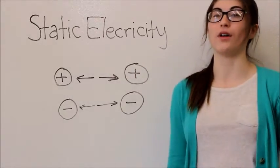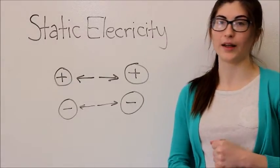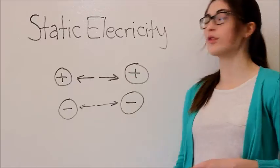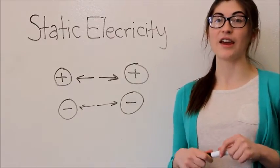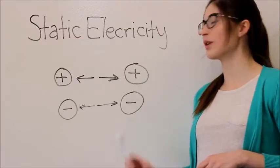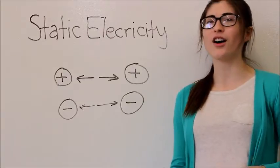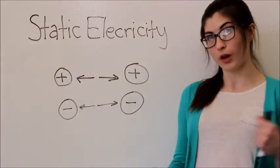Here we have an example of two different charges that are repelling. Here we have two protons and because they are like charges, they repel or pull apart from each other. Here we have two electrons and because those electrons are the same charge, they also repel each other or pull apart from each other.